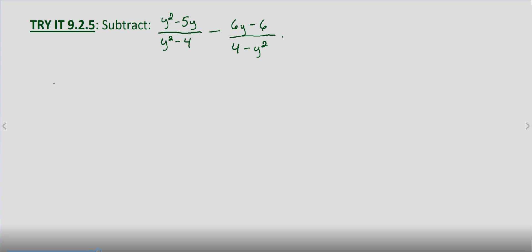I'm going to make the process just a little bit simpler. We have y squared minus five y over y squared minus four, minus, now we have six y minus six over...